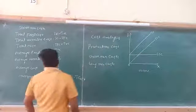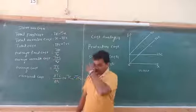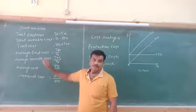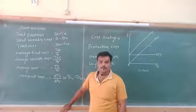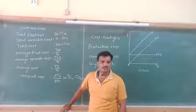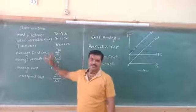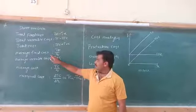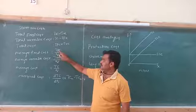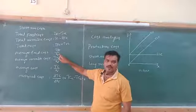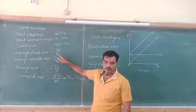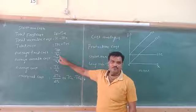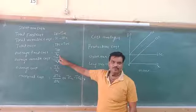Now the fourth type is Average Fixed Cost (AFC). Average means per unit. So Average Fixed Cost means the cost per unit of fixed input. It can be calculated by dividing Total Fixed Cost by the units of output (Q). That is, AFC = TFC / Q, where Q represents units of factors of production.